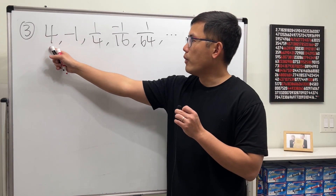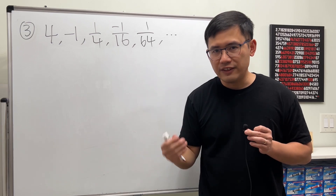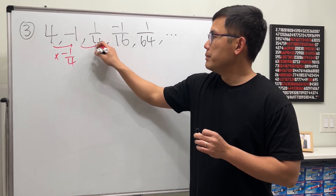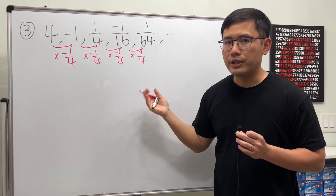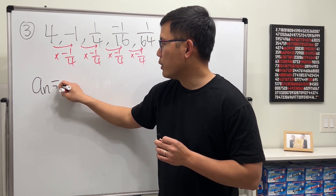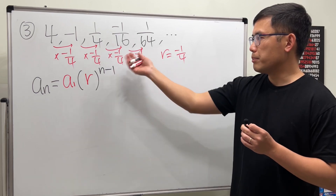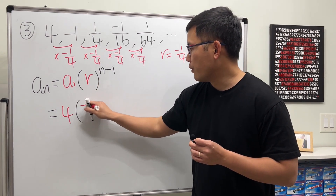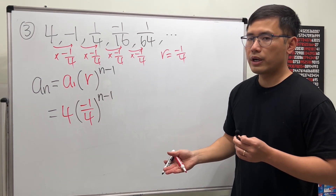Number three: 4, -1, 1/4, -1/16, 1/64, and so on. Each time we're dividing by negative 4, or equivalently multiplying by negative 1/4. This is the common ratio, so this is a geometric sequence with r = -1/4. Using the general formula a_n = a_1 · r^(n-1), we get a_n = 4 · (-1/4)^(n-1).